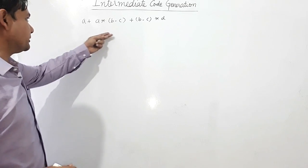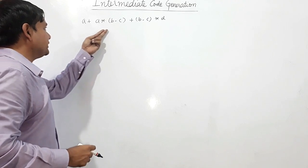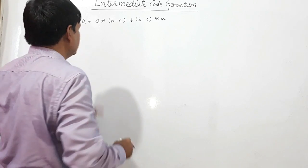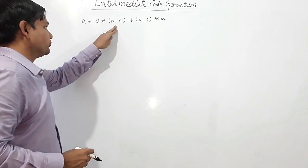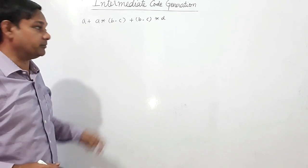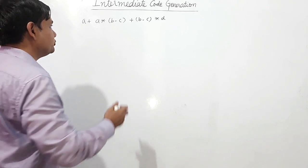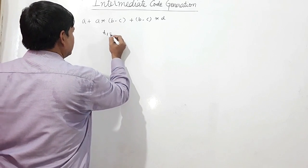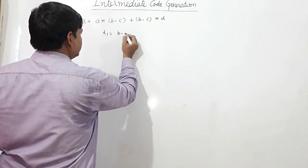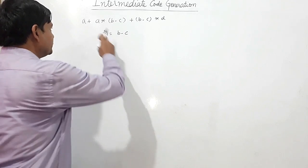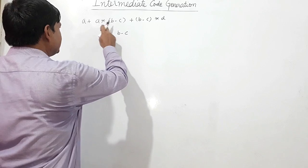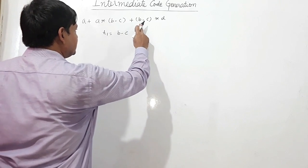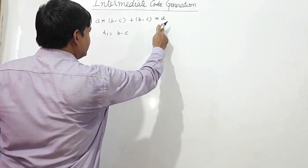We have the expression a + a*(b-c) + (b-c)*d. Here, b minus c is in brackets so we have to evaluate it first. t1 is equal to b minus c. So the expression becomes a + a*t1 + t1*d.